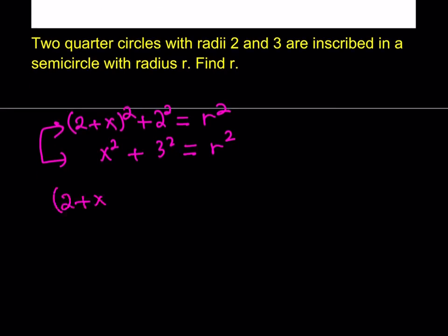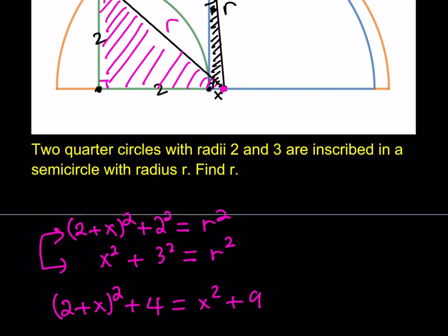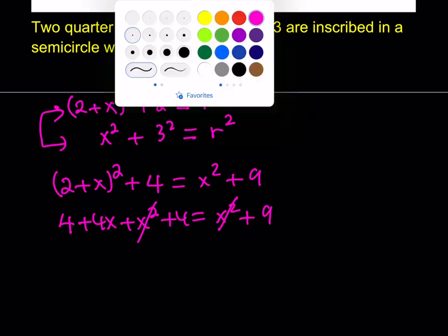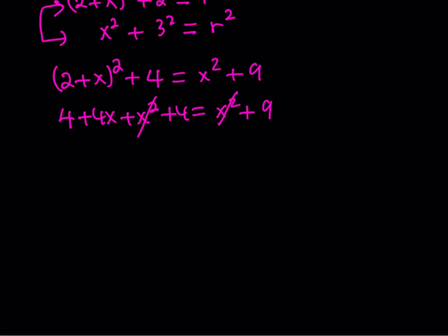2 plus x quantity squared plus 2 squared which is 4 equals x squared plus 9. So I think it would make sense if we expand this. 4 plus 4x plus x squared plus 4 is equal to x squared plus 9. Now one of the best things about this equation is that x squared cancels out and we end up with a linear equation. This is the only x we have. 4 plus 4 is equal to 8, subtracted from 9 you get 4x equals 1 which means x equals 1 fourth.